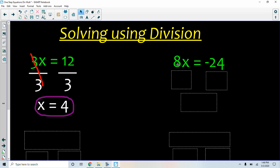Here we have 8 times x, so we need to divide by 8 on both sides. 8 divided by 8 is 1, so we have 1x left, but we don't need to write the 1. We have our equal sign, and negative 24 divided by 8 is negative 3.